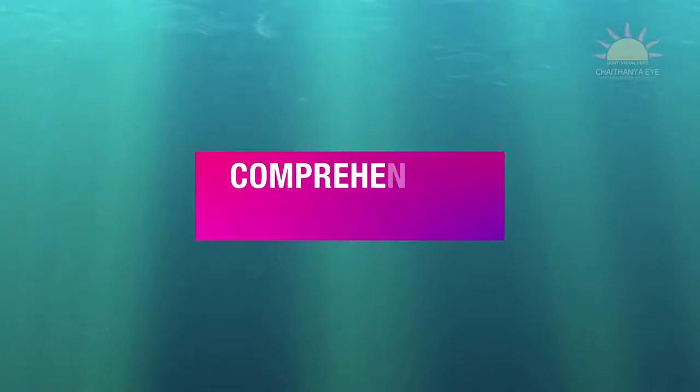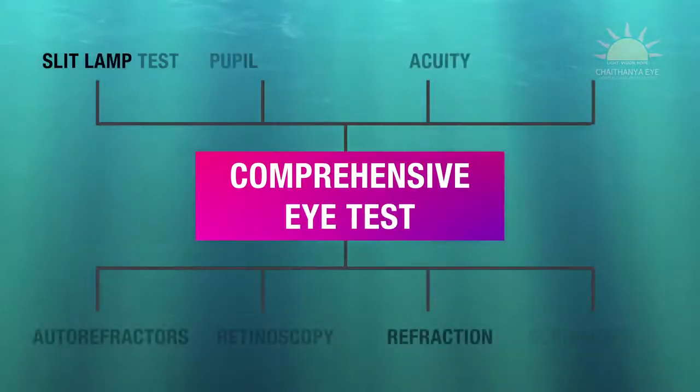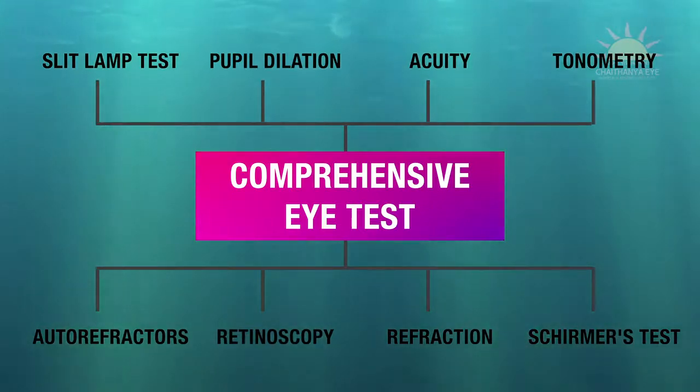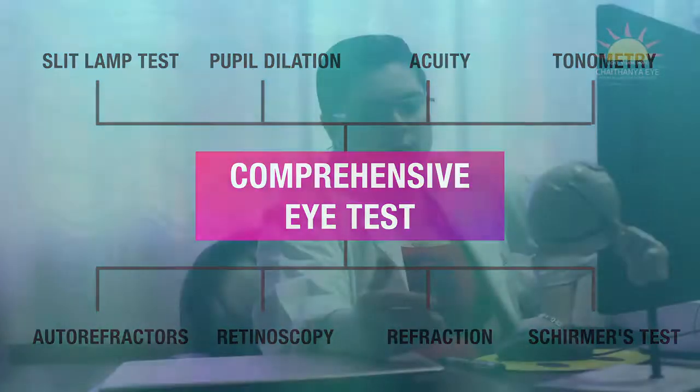A comprehensive eye checkup is important mainly to identify any uncorrected refractive errors which can contribute to the development of digital eye strain, especially when you are using computers for long periods. When using spectacles according to your refractive error, an anti-reflective coating will help to prevent glare from the computer screen and prevent computer vision syndrome.